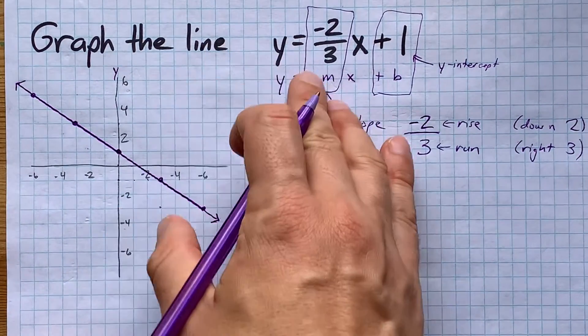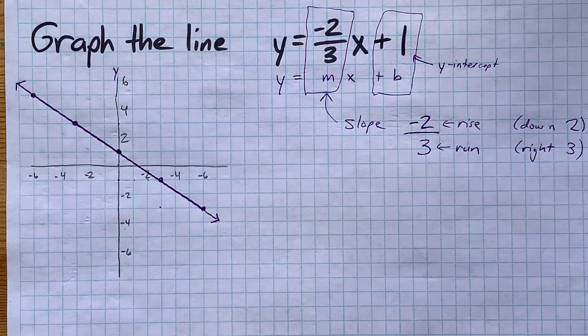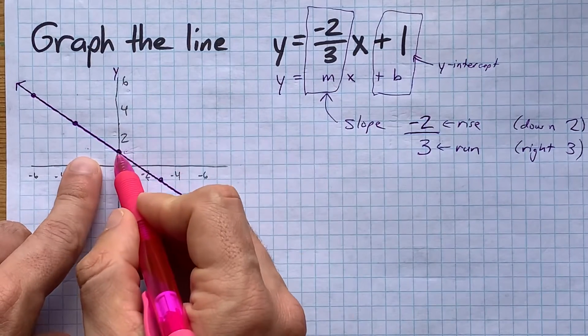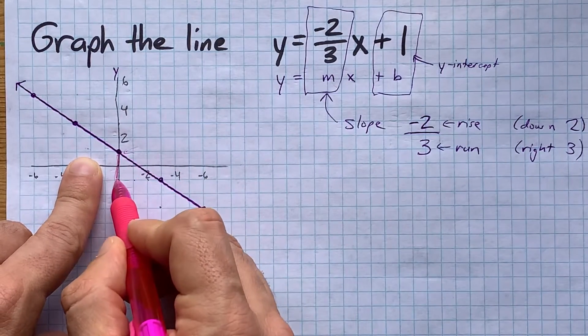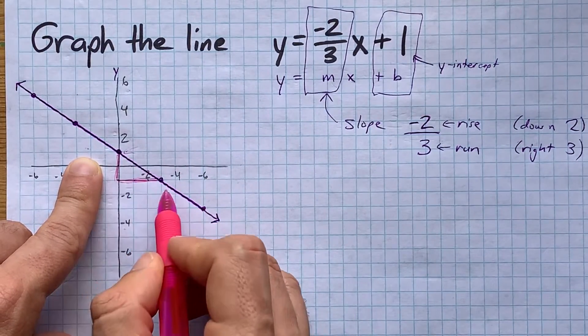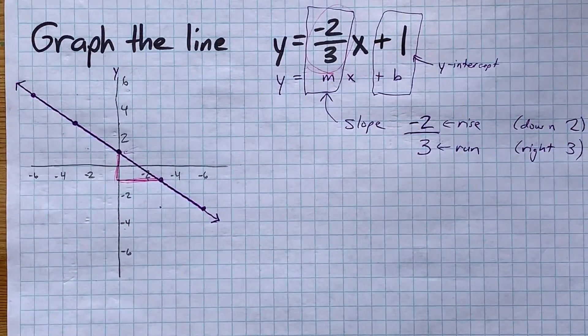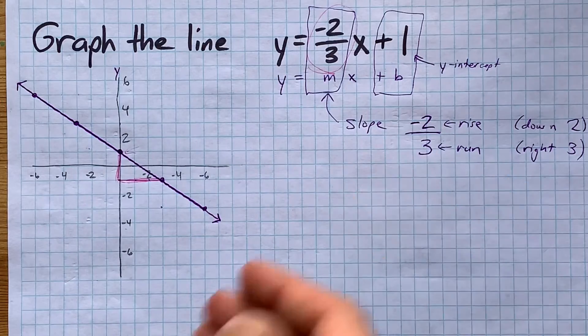There you go. The line y equals negative two-thirds x plus one has a y-intercept here at one. And then we use down two, right three from the slope to generate more points on the line. Thanks for being with me, and best of luck.